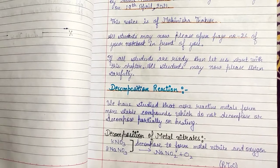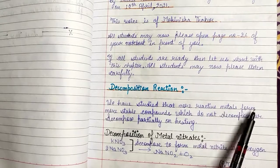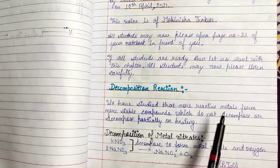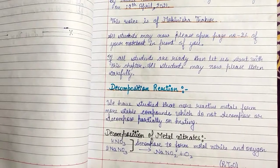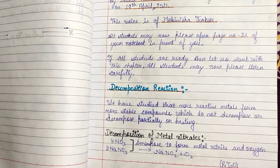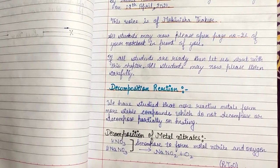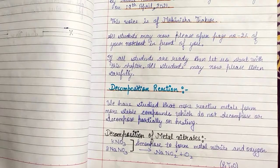Decomposition reaction: we have studied that more reactive metals form more stable compounds, which do not decompose, or decompose only partially on heating. Now we will discuss the decomposition of metal nitrates. There is an exception: potassium and sodium decompose to form metal nitrite and oxygen.